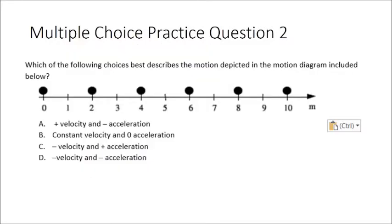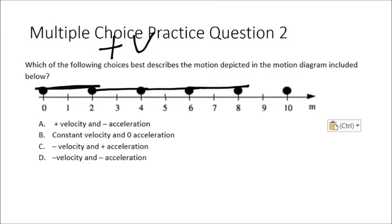Multiple choice question two is another motion diagram. The object is moving to the right, meaning positive velocity. During the first second it travels from 0 to 2 meters; the second from 2 to 4; the third from 4 to 6; the fourth from 6 to 8 — traveling two meters every second. That tells us it has a constant velocity. The velocity is positive and the acceleration is zero. The correct choice is B: constant velocity of two meters per second with no acceleration.